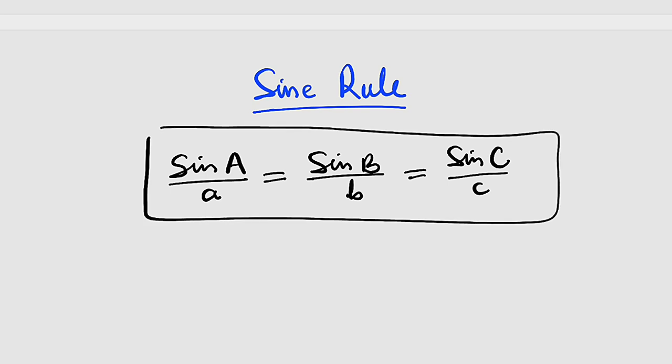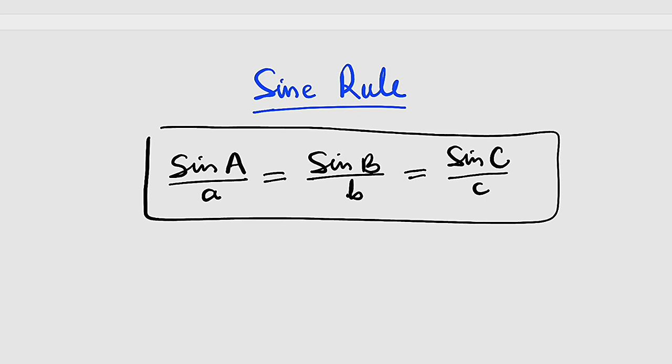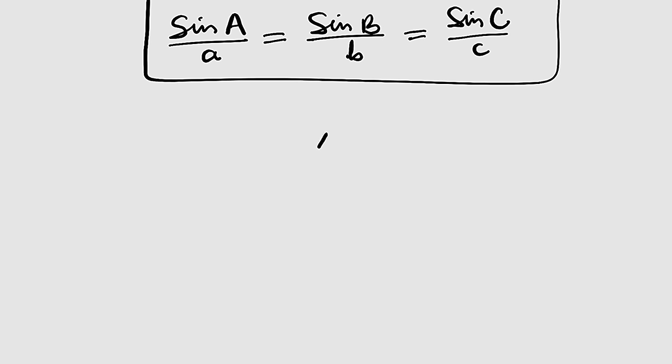What can we use this formula for? We can use it to find the missing side length and angle of other triangles apart from right angle triangles. For example, if we have a triangle like this, you can see that this is not a right angle triangle. We have A, B, and C. This is small letter a, this is small letter b, and this is small letter c.